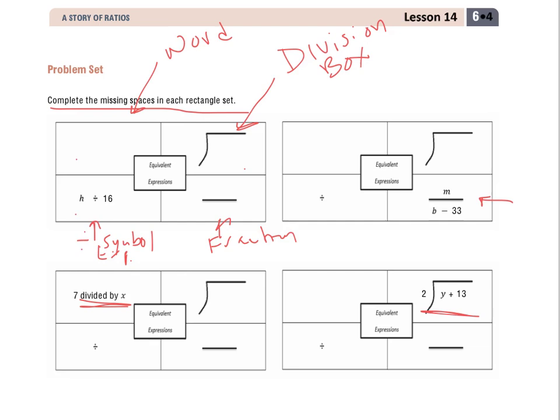So now I can fill these all in, based off of the one that I'm given. So I'm given this, and I know that this is saying H divided by 16. So just me saying that out loud tells me that I can put that in word form. So I have H divided by 16. That'll go there for word form.